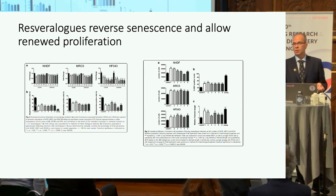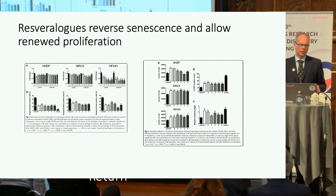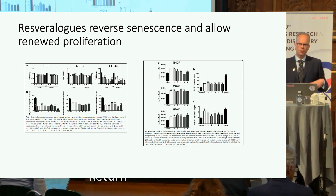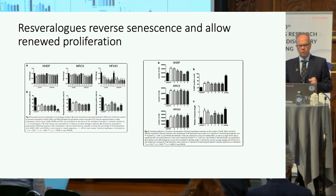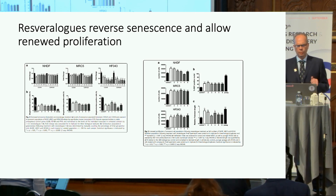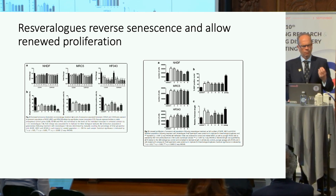With the five compounds we selected, we found something quite impressive: resveratrol analogues will rescue senescence and allow renewed proliferation. At the appropriate dose, senescent cells re-enter the cell cycle and begin to divide again. This is associated with an extension of telomeres, and they continue to proliferate. If you take the compound away, the telomeres shorten back down and the cells go back to sleep. I'd love to say that was an expected finding, but it wasn't — though it was good that it happened.